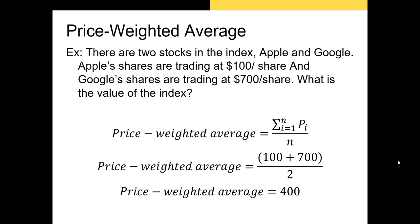Now it's time to discuss price-weighted and value-weighted index averages. Price-weighted index averages simply average the share prices of each stock in the index. For example, if a price-weighted index had Apple and Google, and Apple was trading for $100 a share and Google was trading at $700 a share, the value of the index is simply the sum of the prices divided by the number of stocks in the index. So here we have Apple at $100 per share and Google at $700 per share — two stocks — giving a price-weighted average of $400.